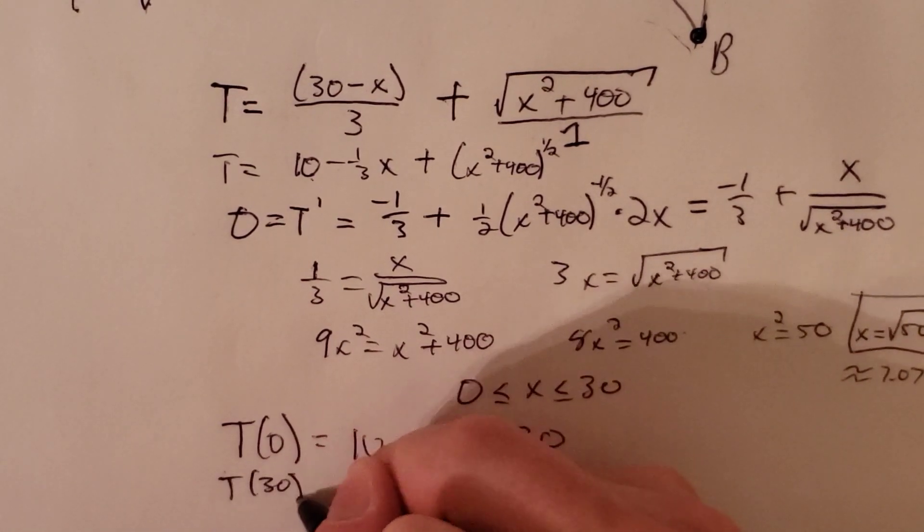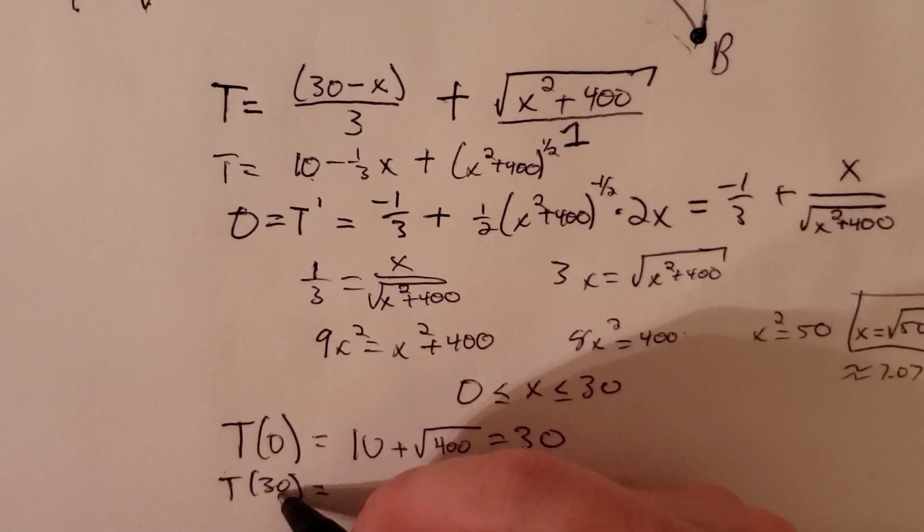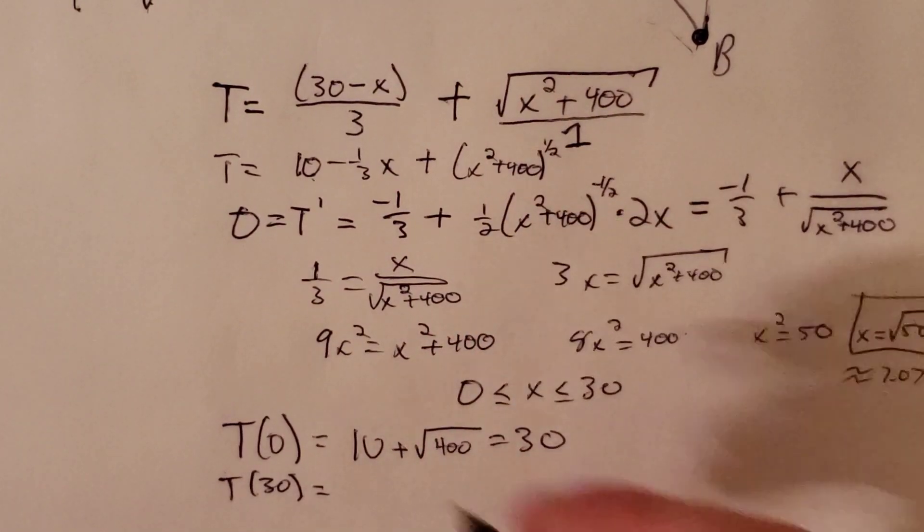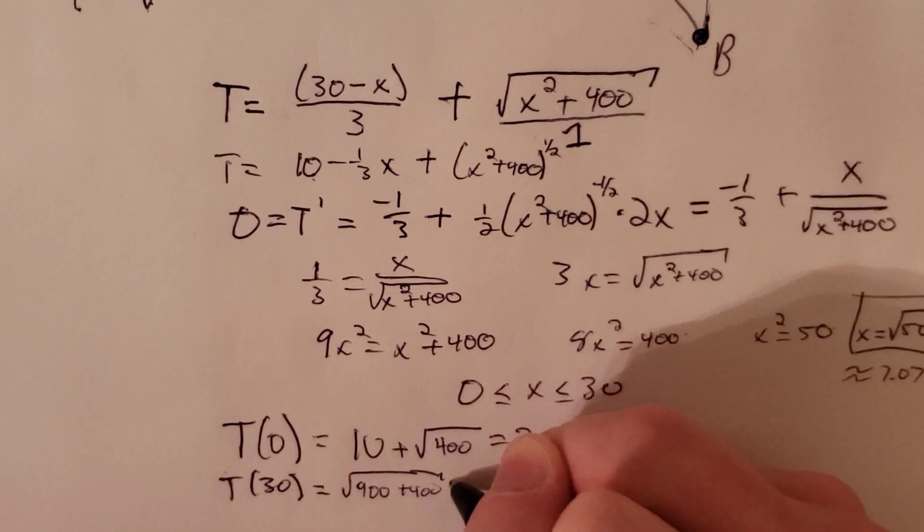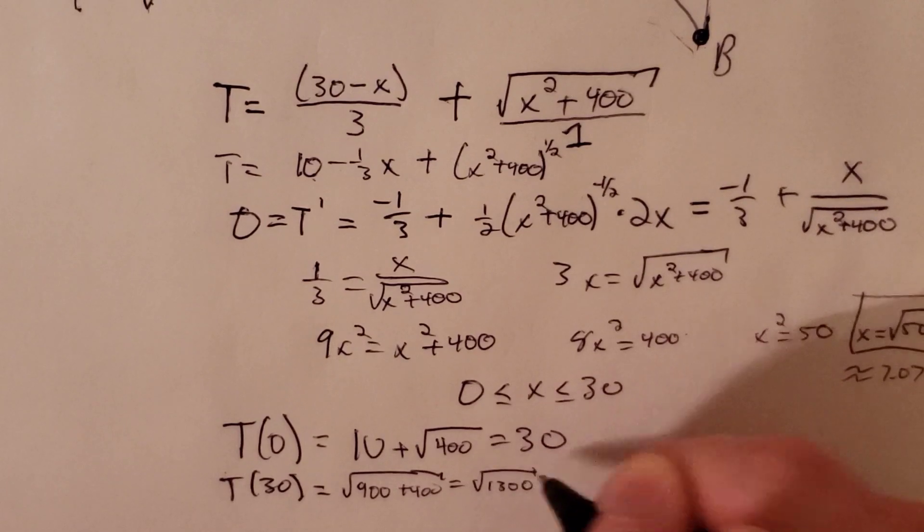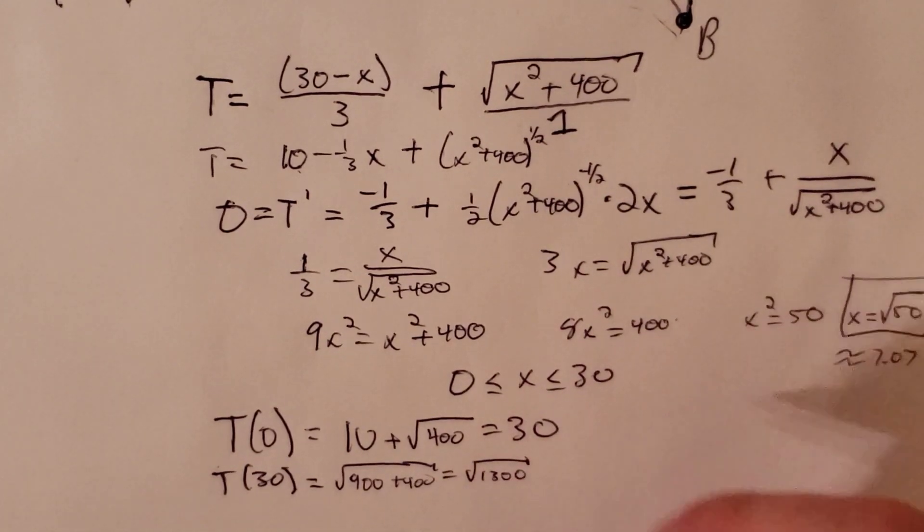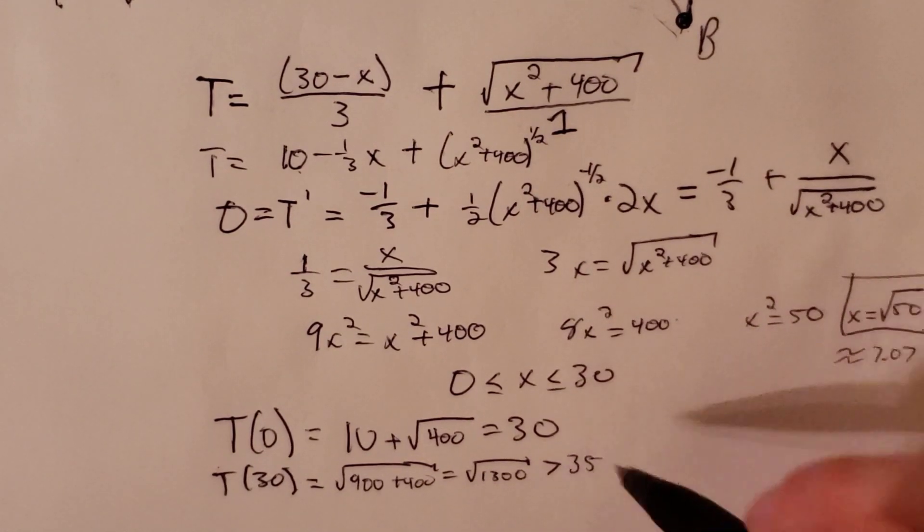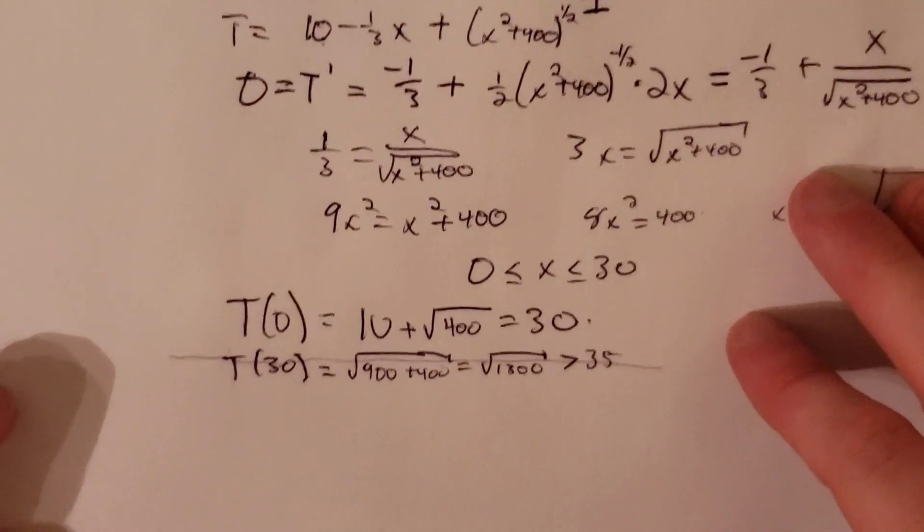If x is 30, then this part right here is 0. So we just get the square root of 30 squared, which is 900 plus 400. That's the square root of 1300. I happen to know that 35 squared is 1225. So the square root of 1300 is certainly bigger than 35. So if we're trying to minimize, we can go ahead and get rid of that as a possibility. That will certainly not minimize our time because we've already found something smaller.